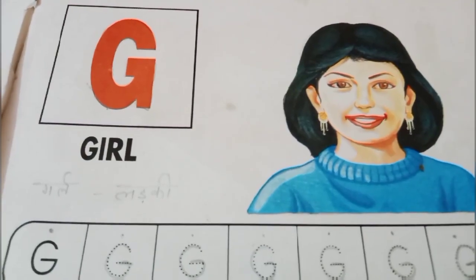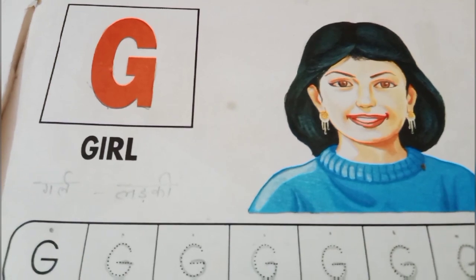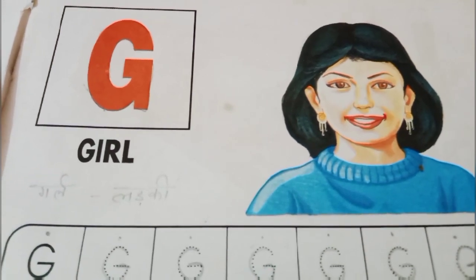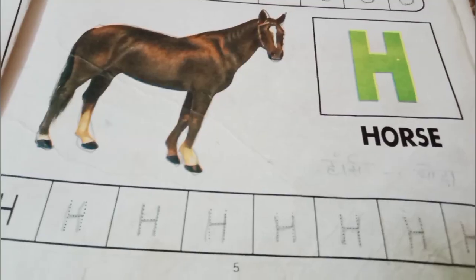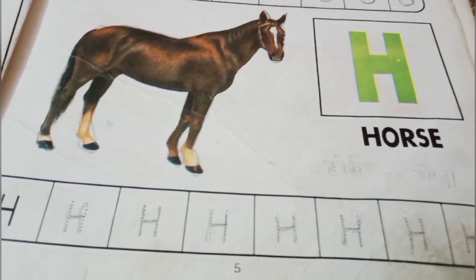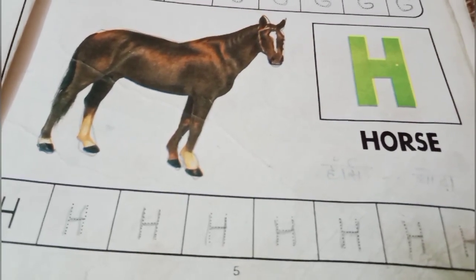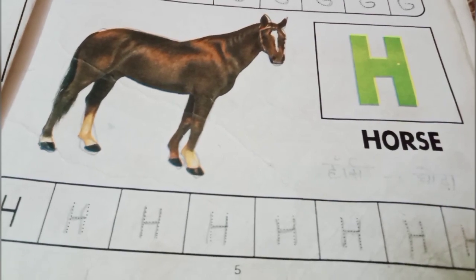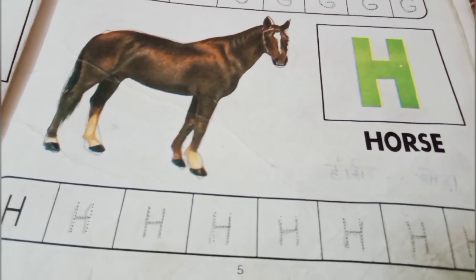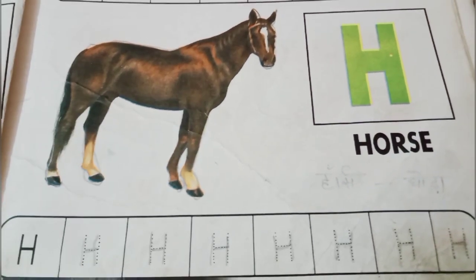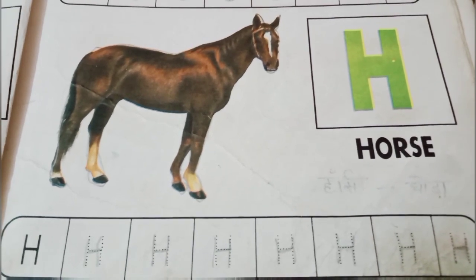G for girl. G-I-R-L. G-I-R-L. H for horse. H-O-R-S-E. H for horse.